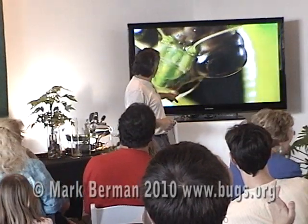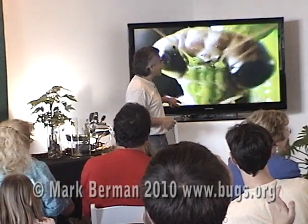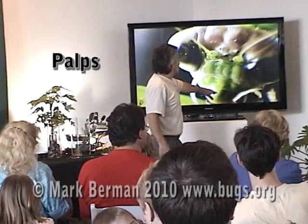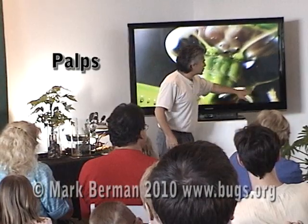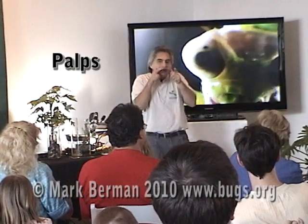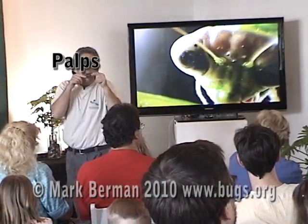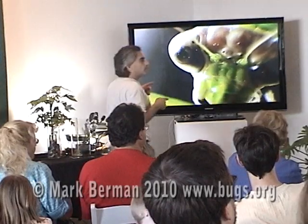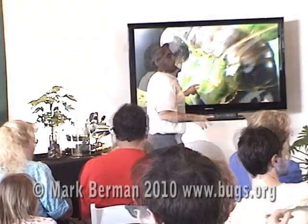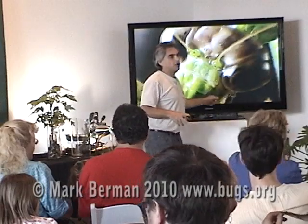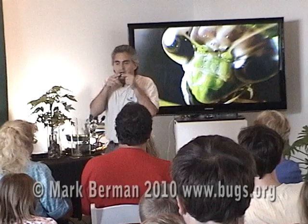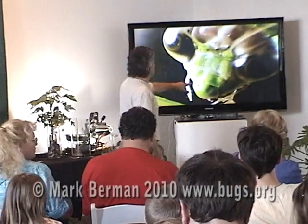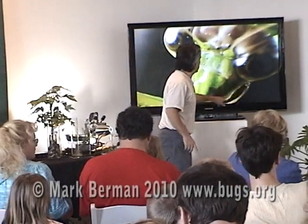These little things on the side are called palps. Two of these palps are associated with the maxilla and they're called maxillary palps, and two of them are called labial palps — it depends on what they're associated with.